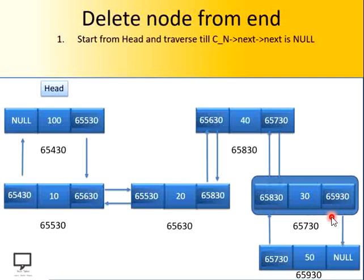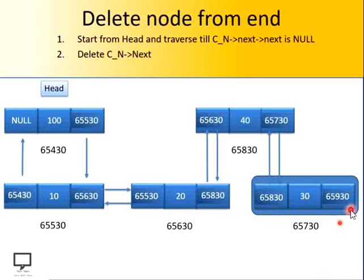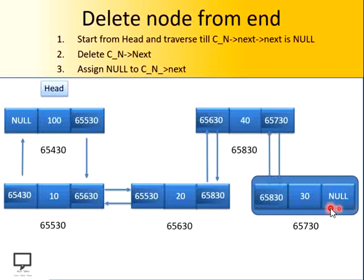We have to stop at the previous node — ultimately, we stop at the second-to-last node. What we will do is delete the current node's next. Whatever the next address is present — that is 65930 — that node we are going to delete. After deletion, the only remaining thing is to update this field to null. Because this node is going to become the last node of your linked list, and the end of the list is determined with the help of null. So we assign the next field of the current node to null. In this way we can delete the node from the end.